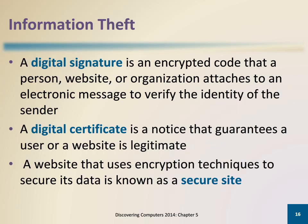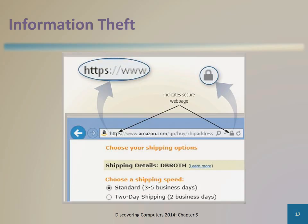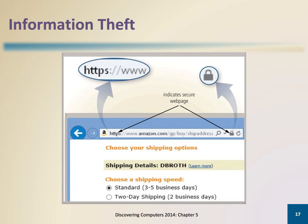Digital signatures are often used to ensure that an imposter is not participating in an internet transaction. A digital signature is an encrypted code that a person, website, or organization attaches to an electronic message. A digital certificate is a notice that guarantees a website is legitimate. A secure site is a website that uses encryption to secure data. Web addresses of secure sites often begin with HTTPS instead of HTTP. Browsers also often display a lock symbol in the window.